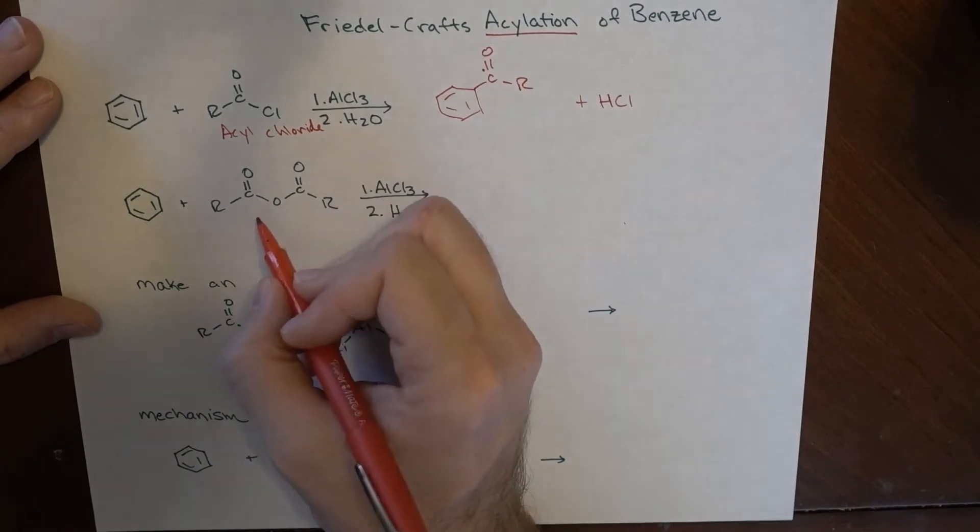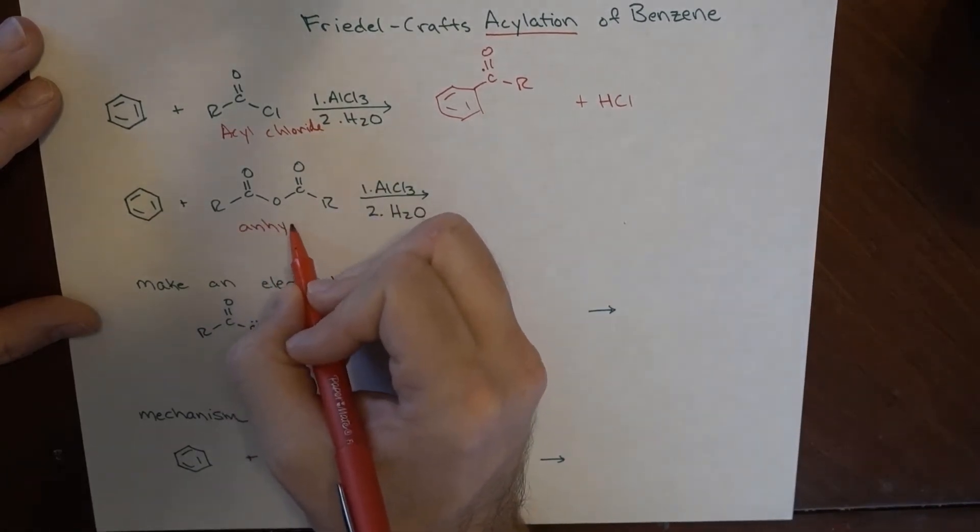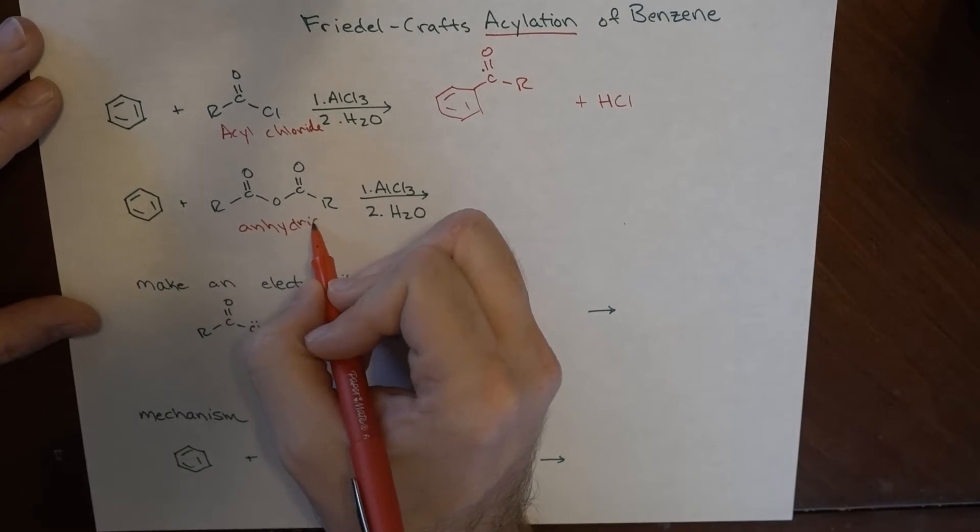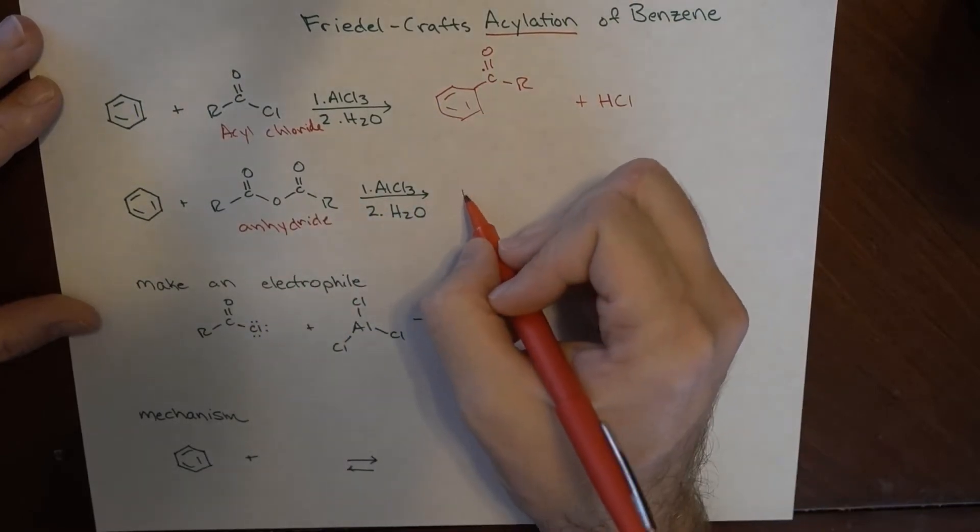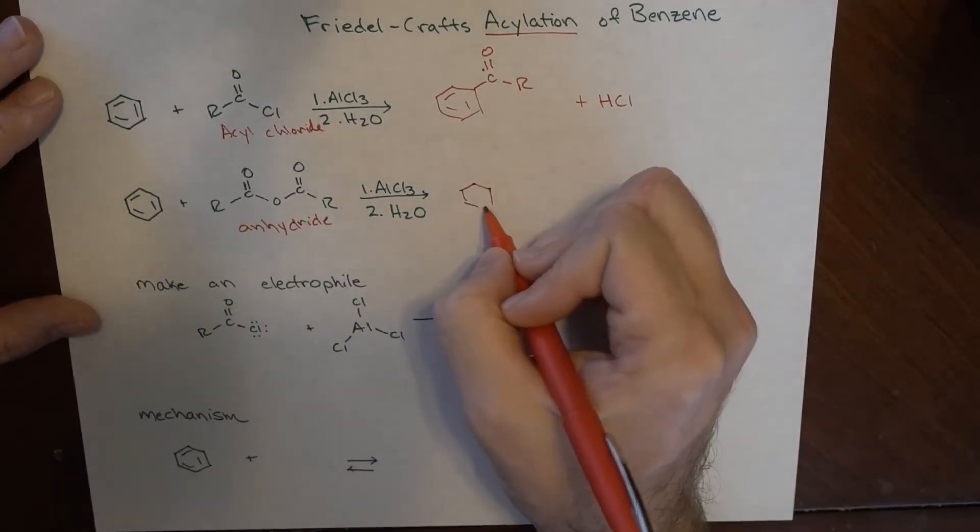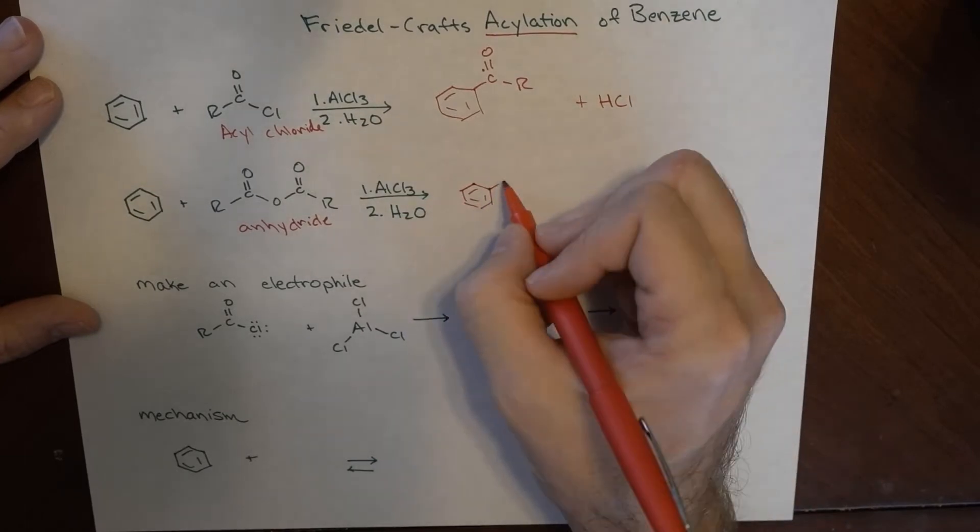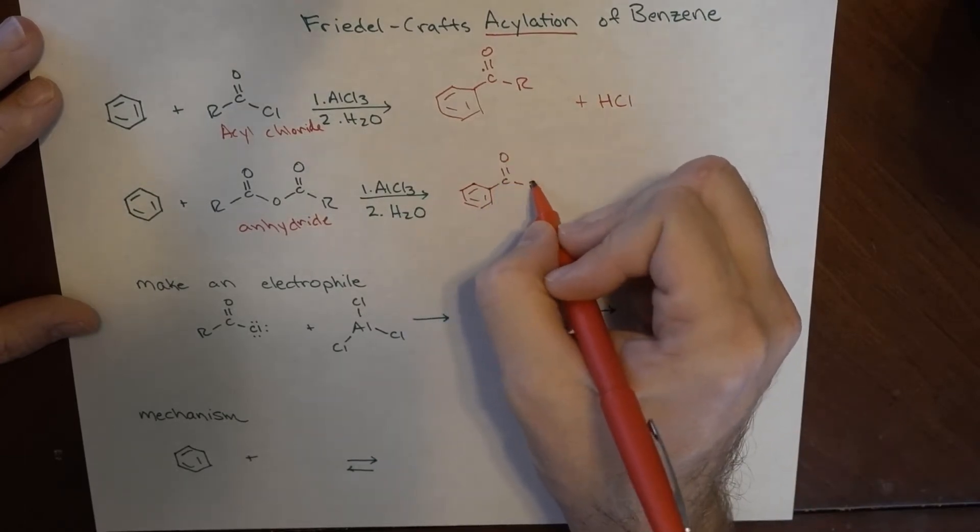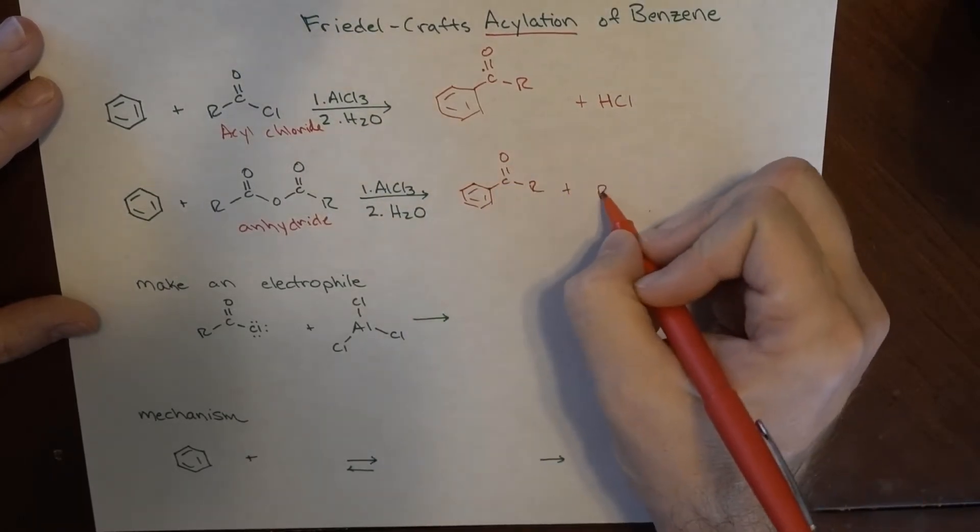We can also use an anhydride for this, an acetic anhydride to be a specific one, but there are other anhydrides we can use and we will end up forming the same thing and a carboxylic acid.